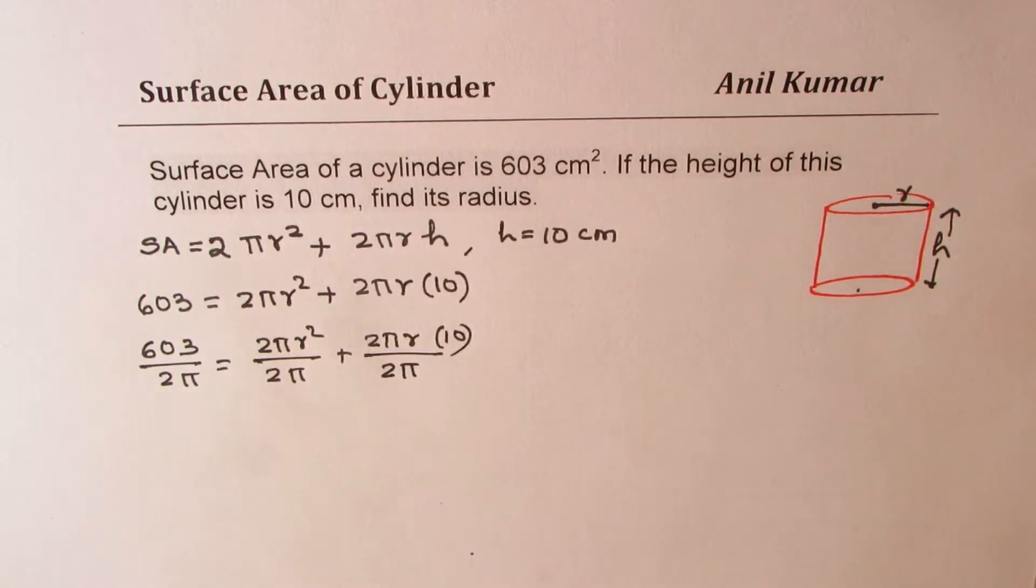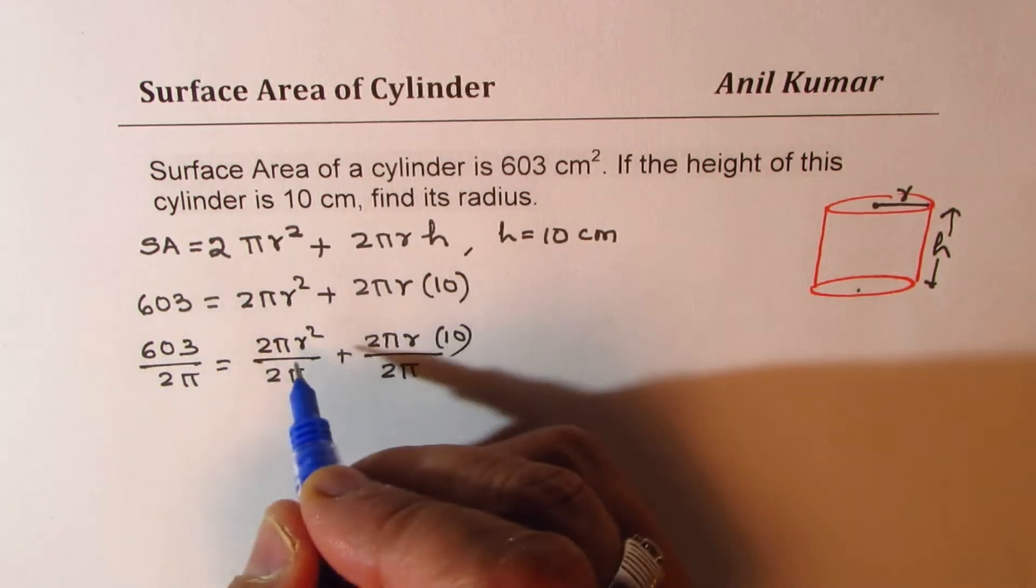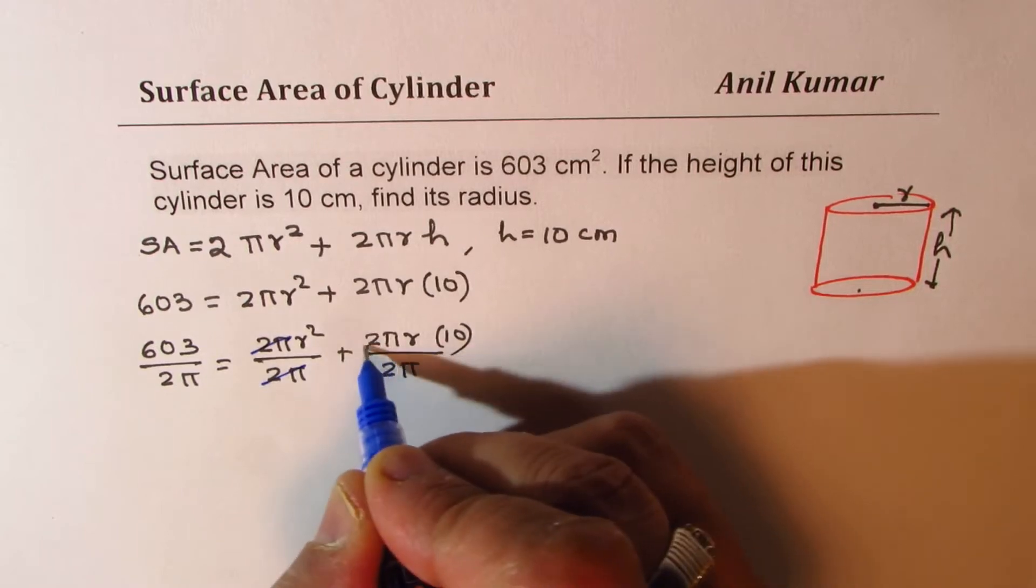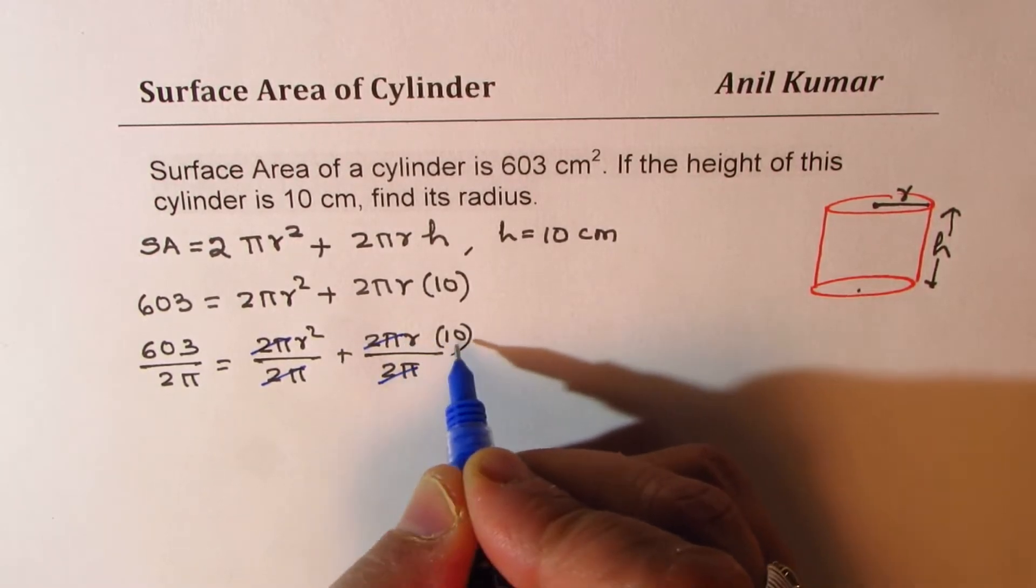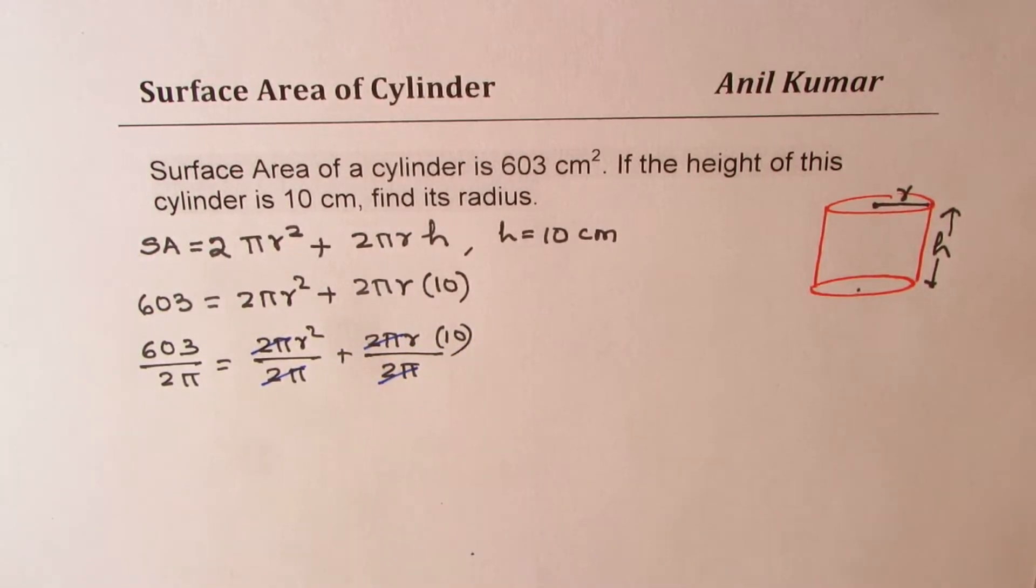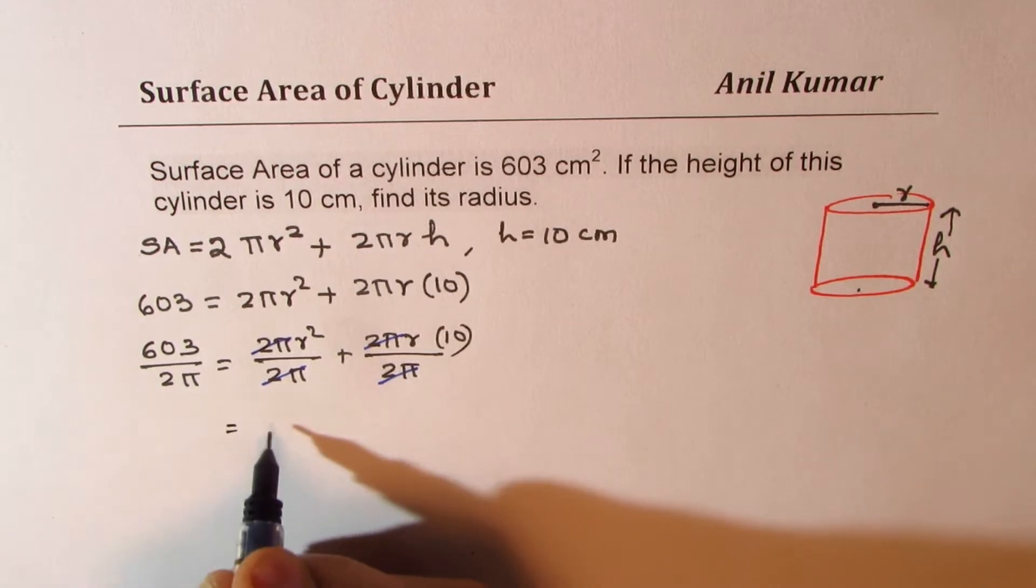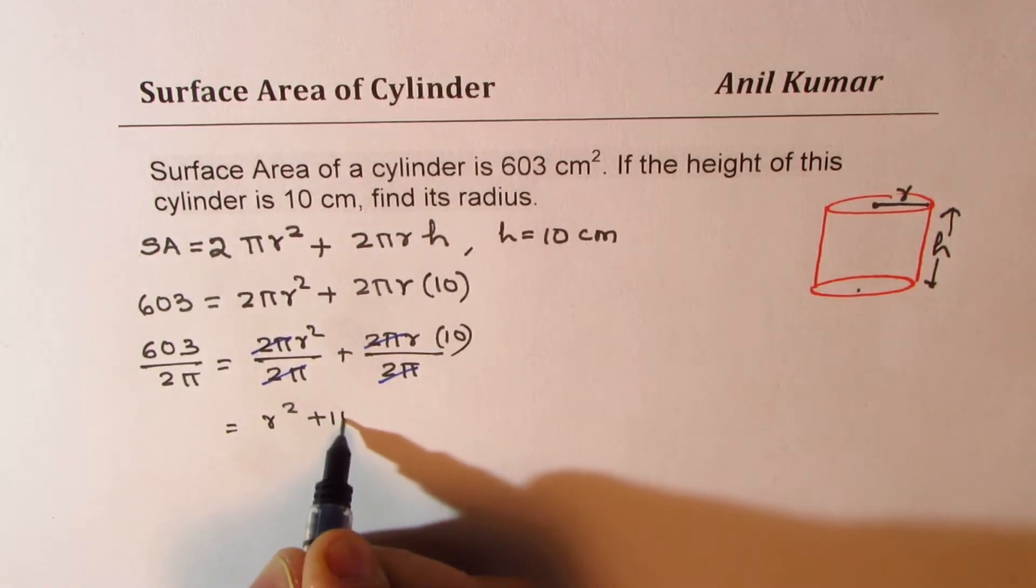So in that case, 2π will cancel and we get a simpler expression. So we get this 2π cancels. So we get 10r here. So on the right side, I do get r² plus 10r.